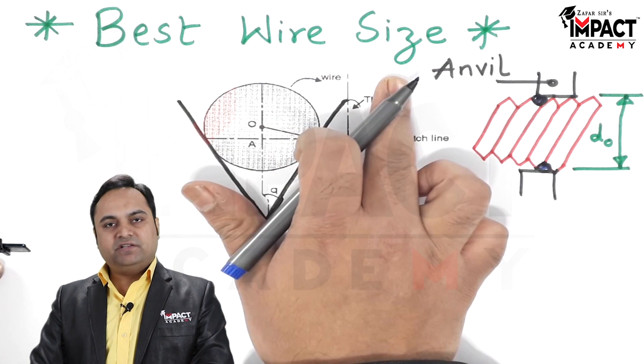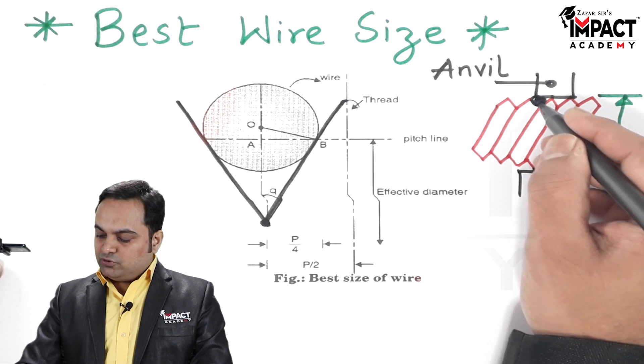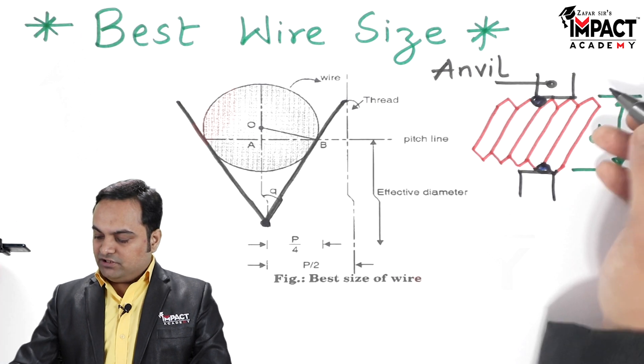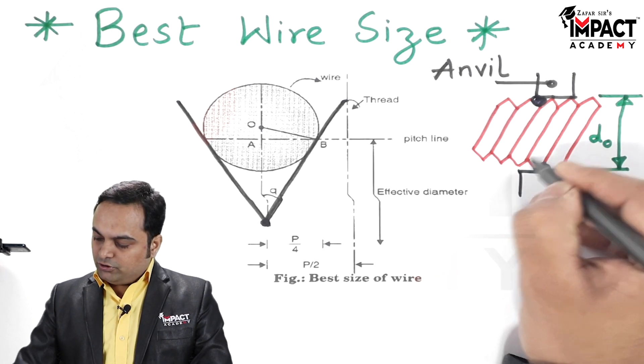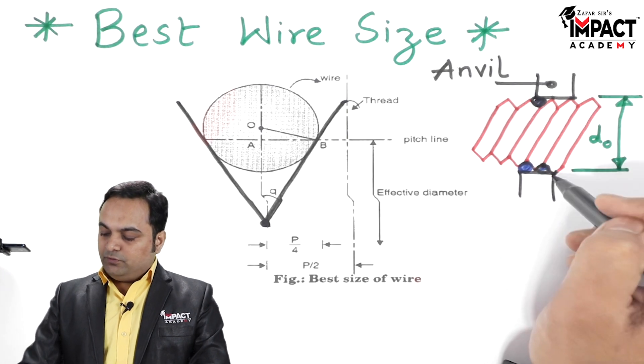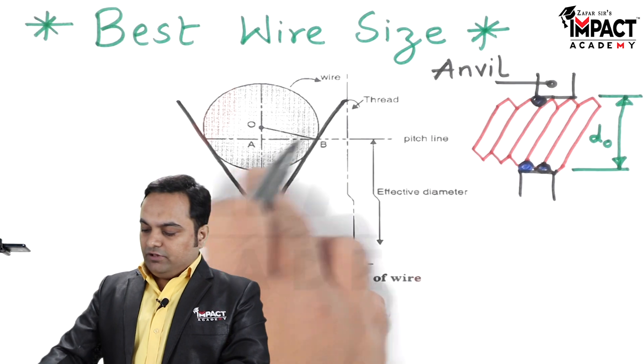So that is why we require the best wire size in order to calculate the diameter D. If we are using two wires then it is called the two-wire method, and suppose if we are using three wires in order to get more accurate reading, then it would be called the three-wire system.